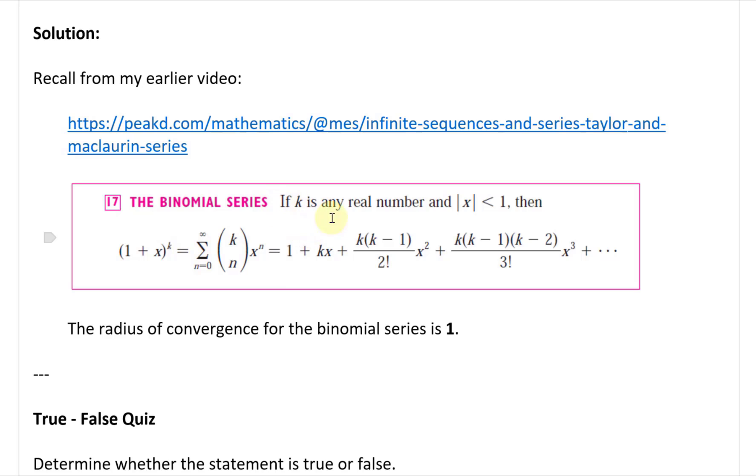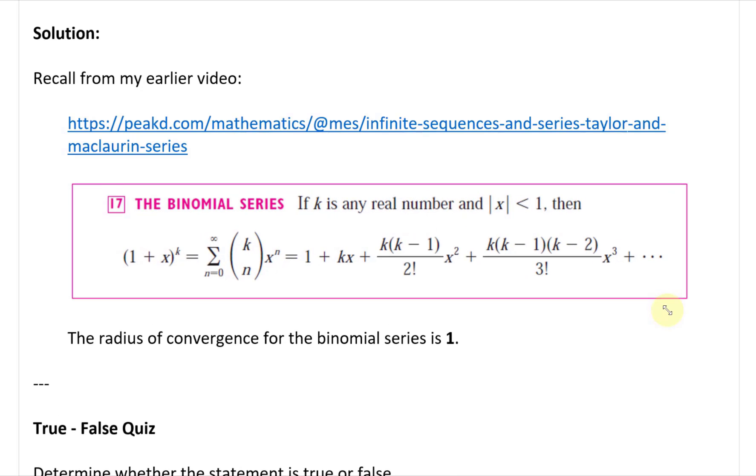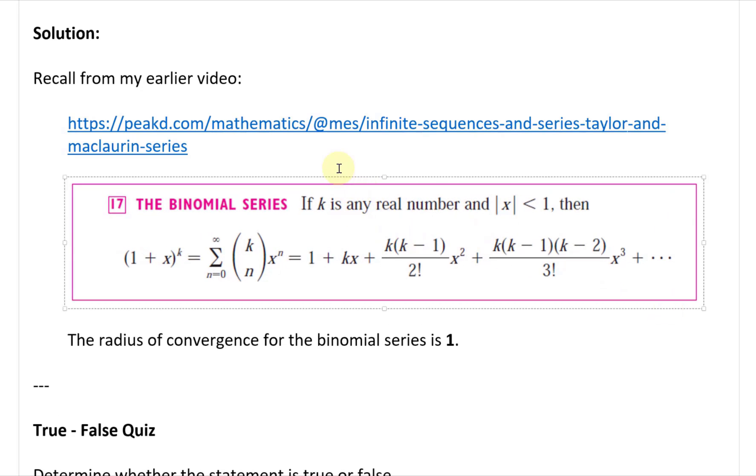So if k is any real number and the absolute value of x is less than 1, which is also the radius of convergence 1, the radius of convergence for the binomial series is 1.